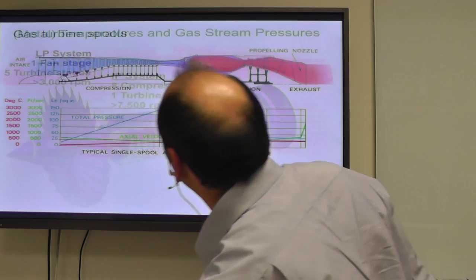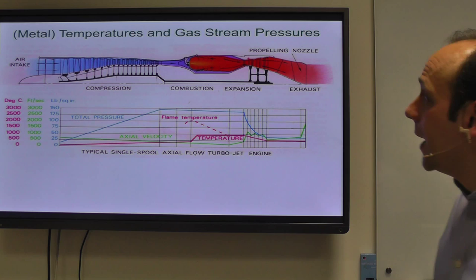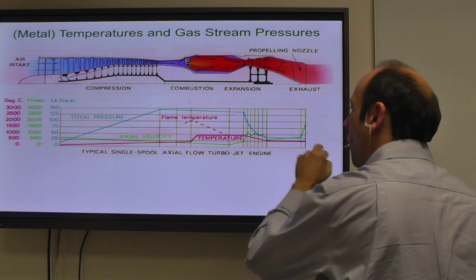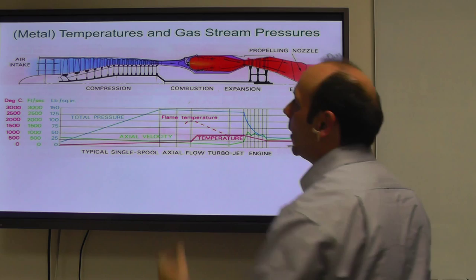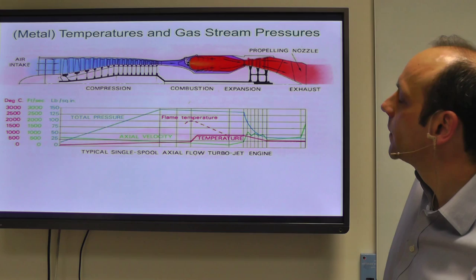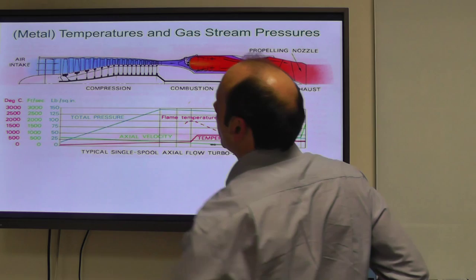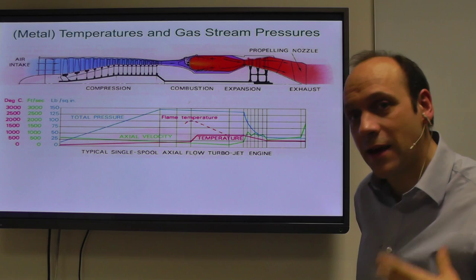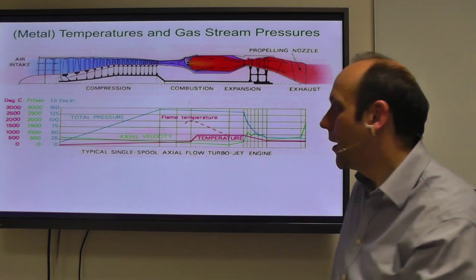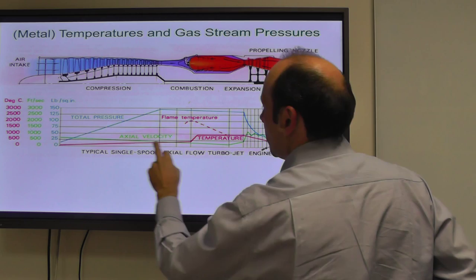In terms of temperatures and pressures through the engine: pressure builds up, then drops; temperature gradually increases. At the back end of the compressor you're at maybe 850 degrees C. The blade temperature is a bit lower, and the discs hanging on are lower still. Then you inject fuel and burn it — the gas stream temperature gets up above the melting point of the alloy, and you have to protect by bleeding cooling air over the blades. That temperature then drops as you come across the turbine as the gas expands.